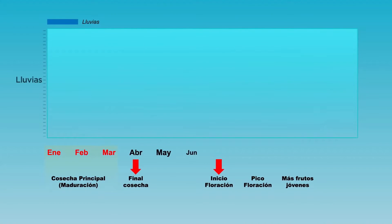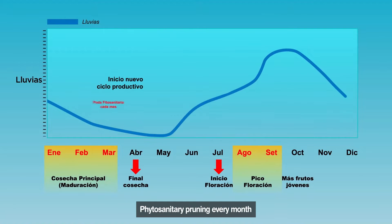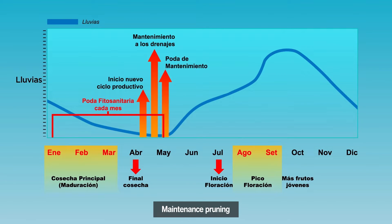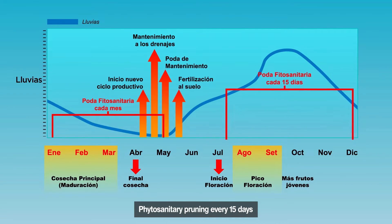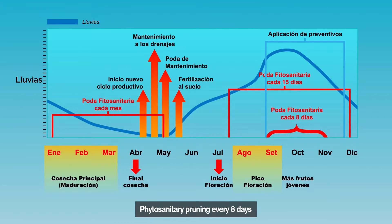If we unify all the tasks included in our annual IPM plan, it will look like this. This would be our vision guide to plan the tasks and not leave out any action. In addition, we will have a better outlook in case we need to make any changes to our plan.